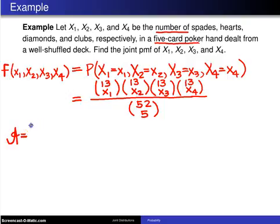One of the more difficult aspects of this problem is coming up with the appropriate support. We have the four values, and these represent the number of cards of each type in the hand. Each one of them can assume the values 0 through 5.